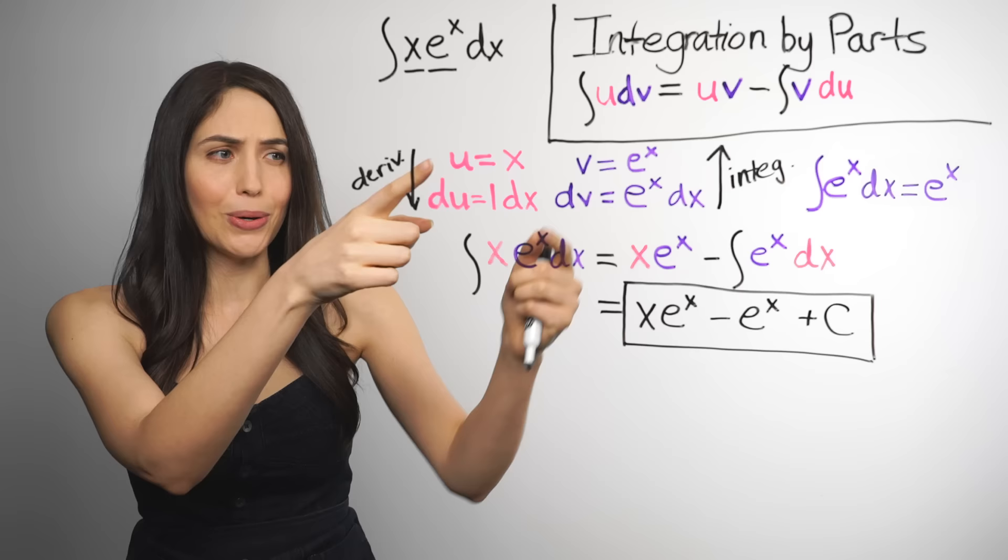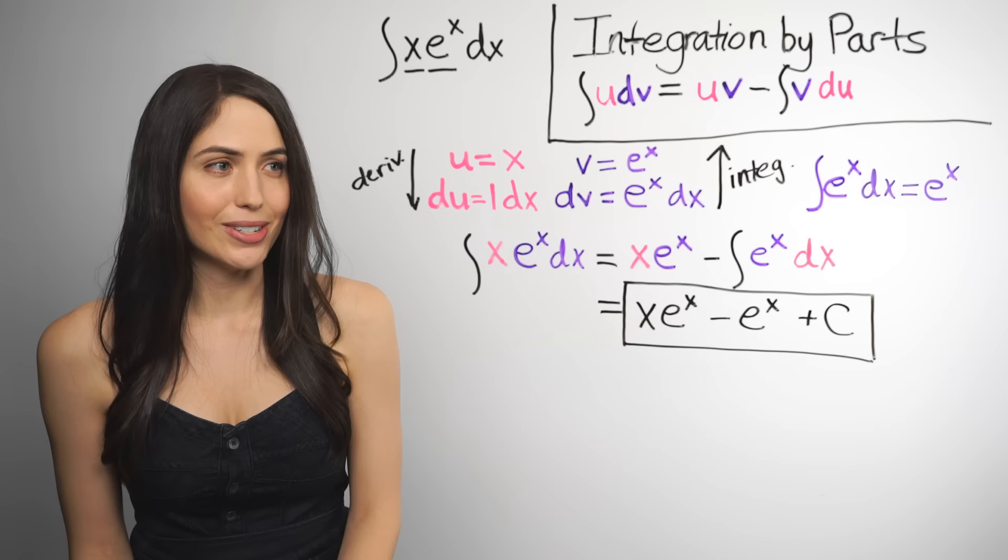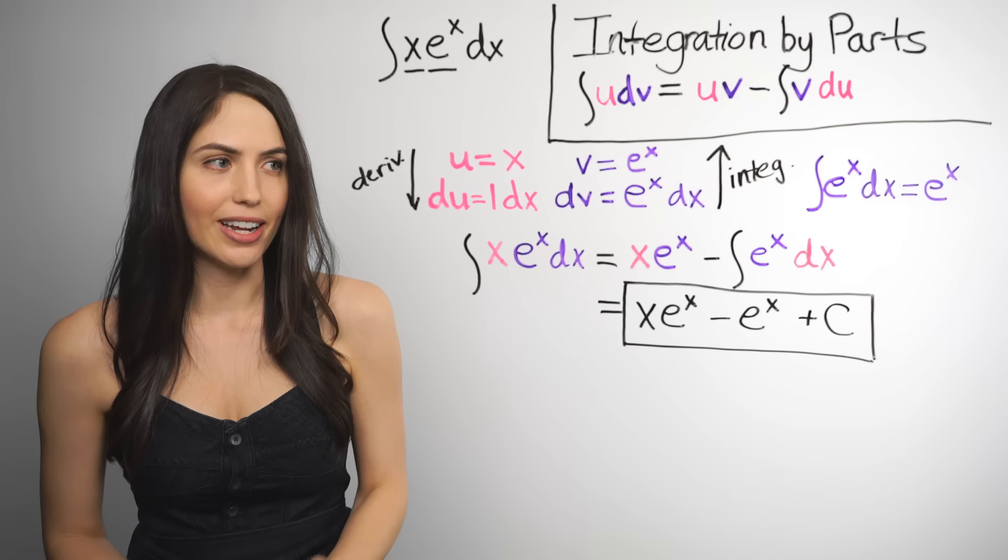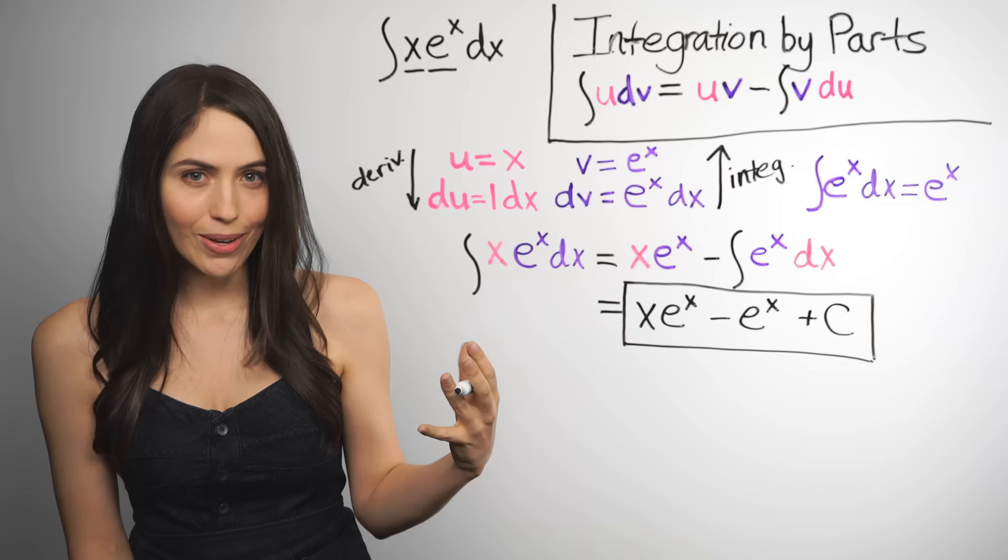I mean, look, guys, if you pick the wrong u and dv the first time, don't panic. It's okay if it doesn't work out the first time. If it turns out that your choice doesn't actually break it down and help you integrate, you can try something else. No harm, no foul. I have done it. And part of getting good at something is bumping up against what doesn't work. So the more practice you get with it, the more skill you'll get at picking u and dv.